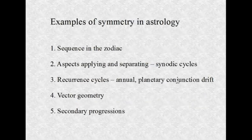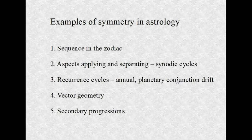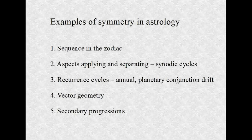Symmetry is found all over astrology. The first example is in the sequence of the zodiac. We have positive signs followed by negative signs — Aries is plus, Taurus is minus, Gemini is plus, Cancer is minus — going right around the zodiac. There's an alternation of waves in that sense. There are also alternations in terms of qualities and elements, all in balance with each other. Draw these geometrically and they look very harmonious.